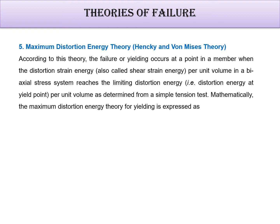Since this is an advancement of strain energy theory, here the maximum distortion strain energy — that is, the torsion strain energy per unit volume in a biaxial stress system, also called shear strain energy — reaches the limiting distortion energy at the yield point. The yield point is considered because yielding starts after that. When the distortion energy per unit volume equals that from a simple tensile test at yield point, the component will fail.